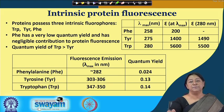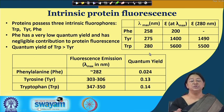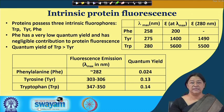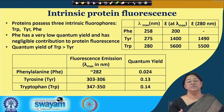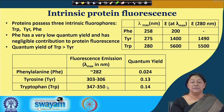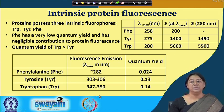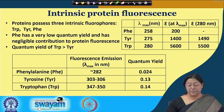We excite our protein of interest at 295 nanometers, ensuring the tryptophan amino acid residues are getting excited. We then start monitoring the emission spectra from around 305 nanometers onwards and see that we get an emission peak at 347 to 350 nanometers. This will be demonstrated in the experiment on fluorescence spectroscopy.